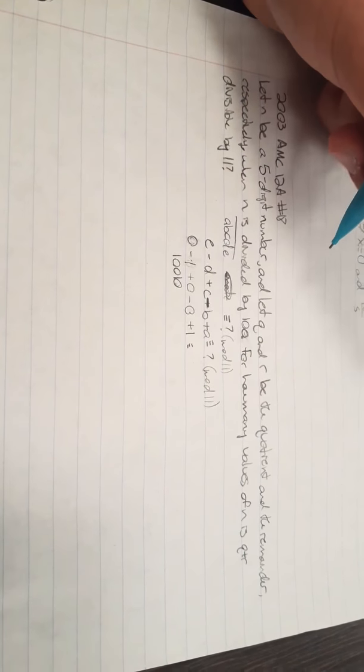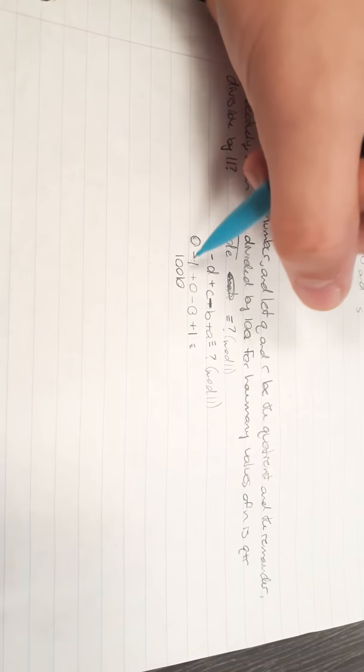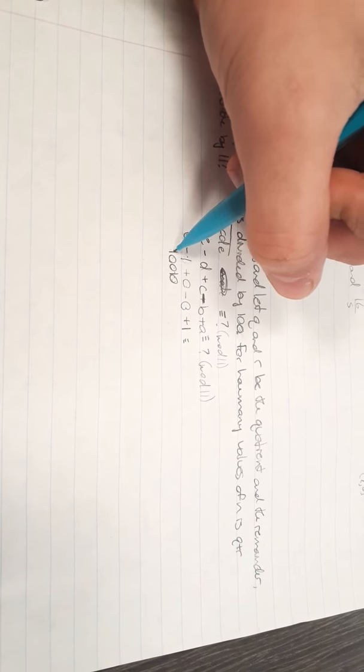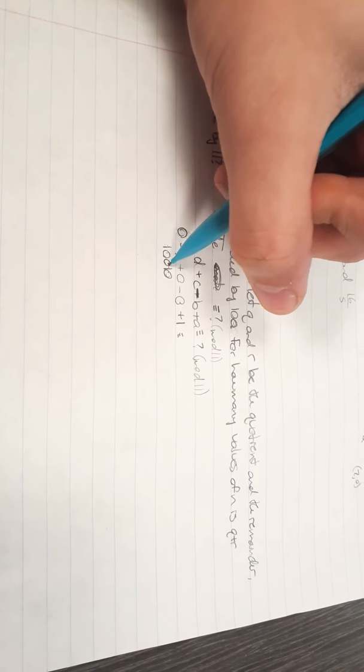Because you have 0 minus 1 plus 0 minus 0 plus 1, so it's going to be 1 minus 1, which is 0, which is 0 mod 11.